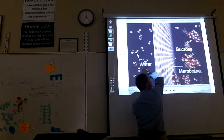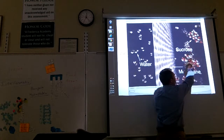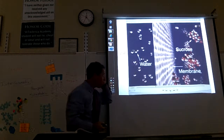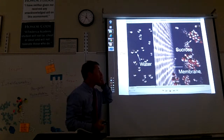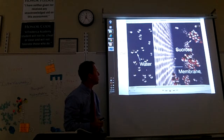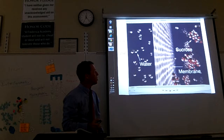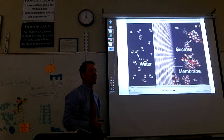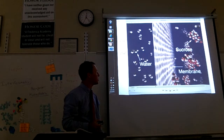The sucrose is in high concentration on the right and low concentration on the left, so the sucrose would like to move across the membrane — but it can't, because the holes aren't big enough in the membrane.